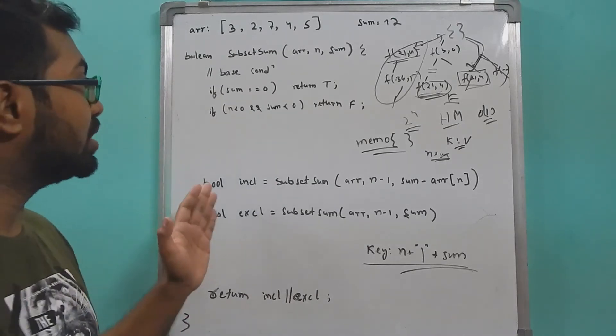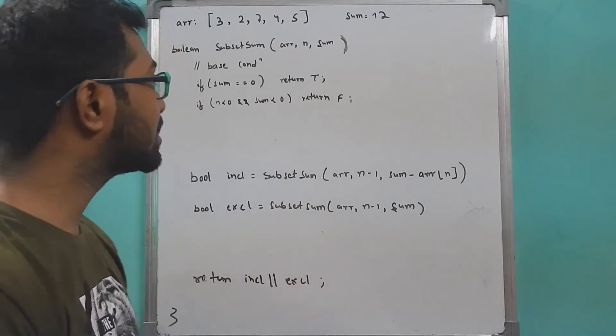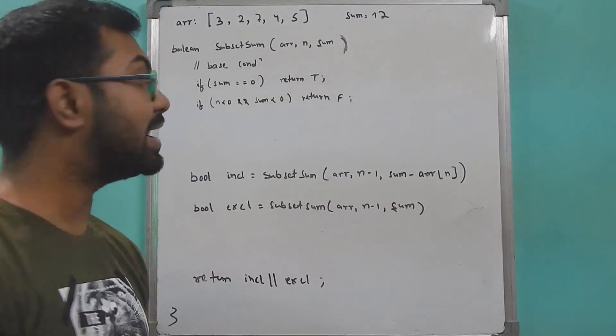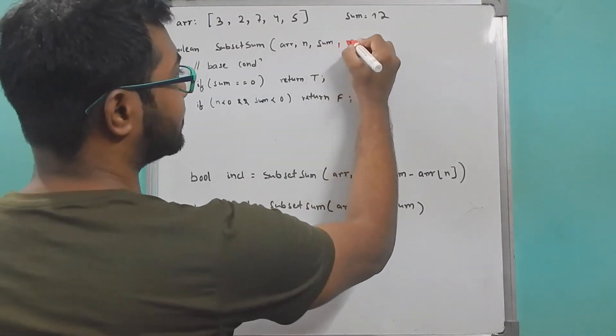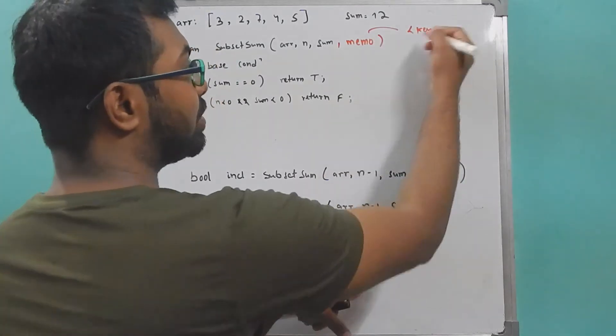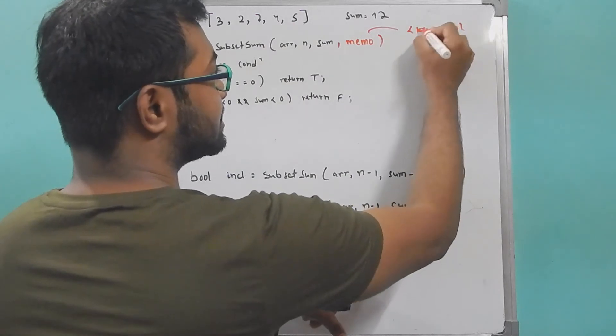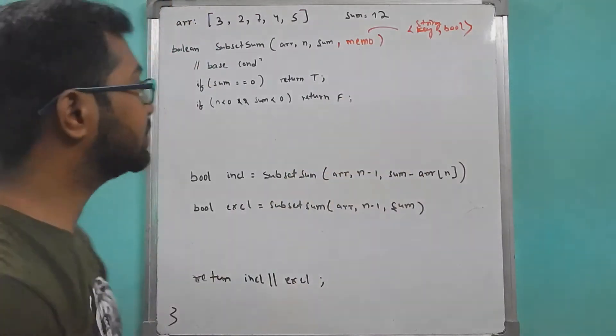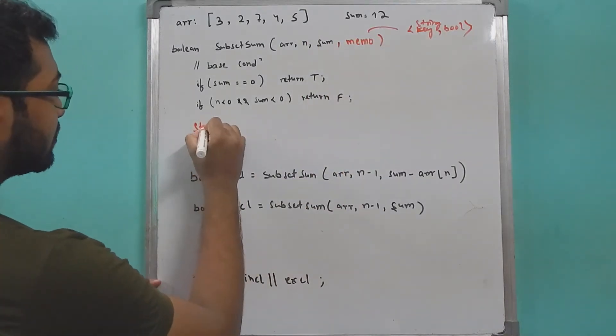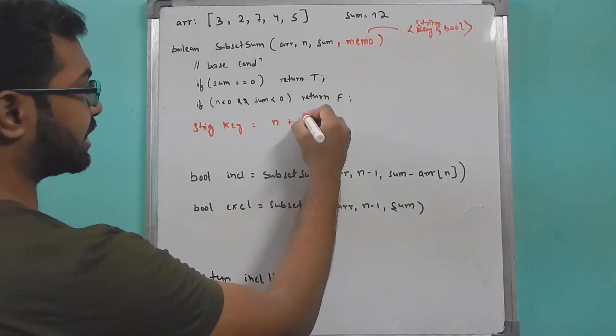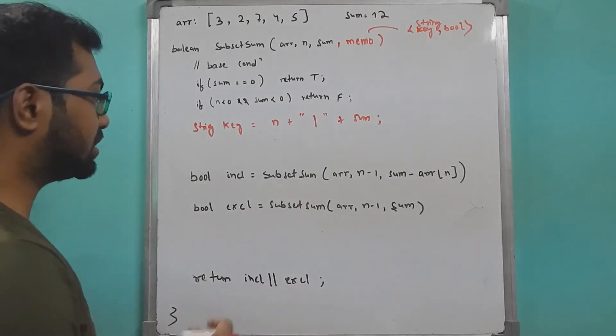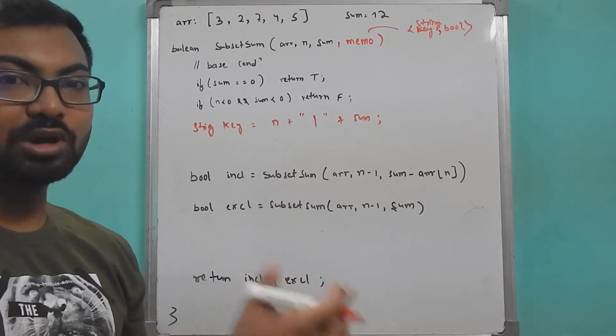Now let's see how we can convert this code into a memoization code. What all things do we need? We need a hash map where we can store our already computed values. Let's call that hash map memo and that is a parameter we are going to add here. Memo is a map which has a key made up of the index and sum, and boolean. So this string and boolean is the type of it. First thing first is we need to form a key. So string key here would be n plus sum - that is going to be the key for my hash map.